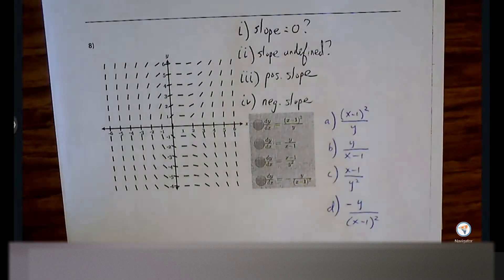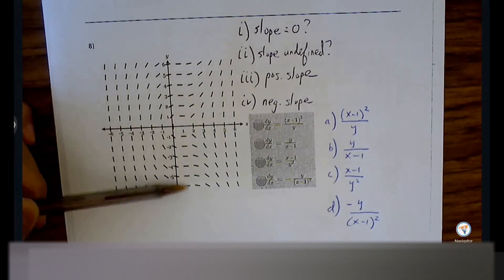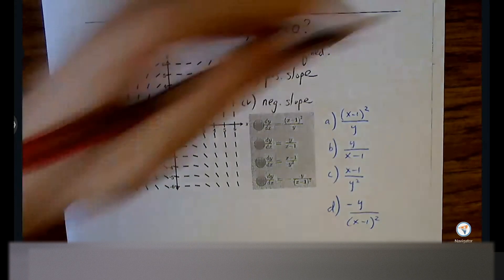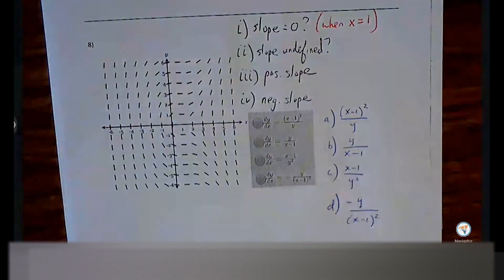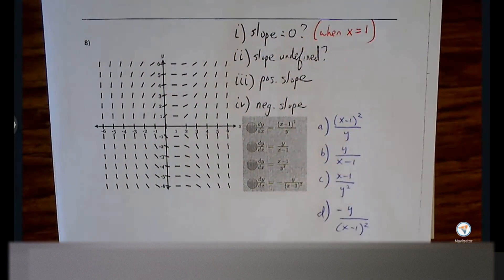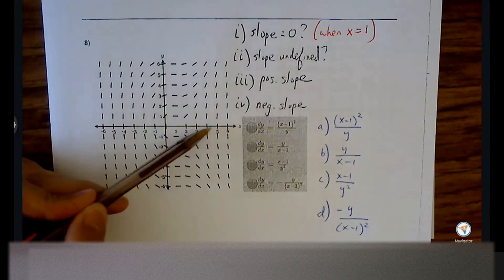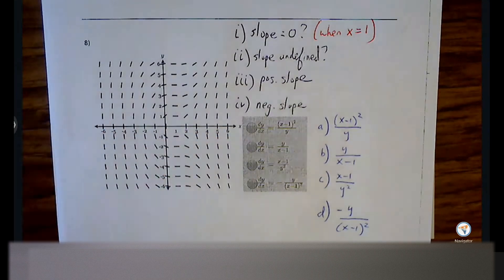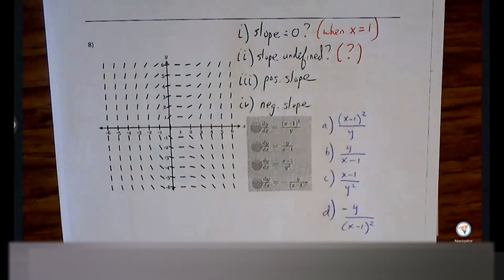Starting with slope zero: do you see a collection of slope zeros and where are they located? All along this vertical line — anywhere that X is equal to 1, we're guaranteed to get a slope zero. For slope undefined: maybe along the axis, especially along the X-axis, but a lot of times the X and Y axes don't give us a clear picture. If that's the case, put a question mark and move forward — we may have to rely on other properties.